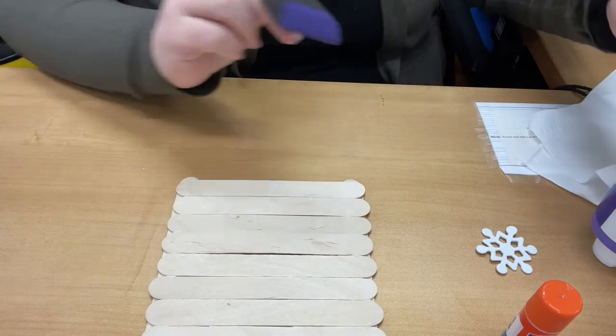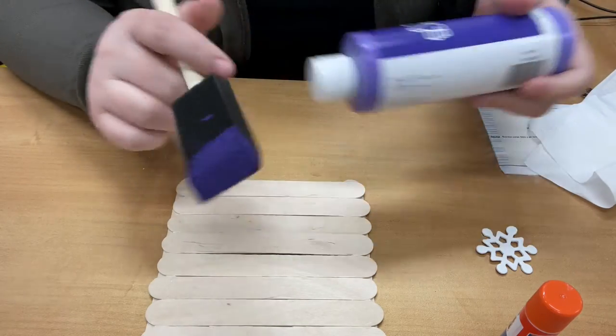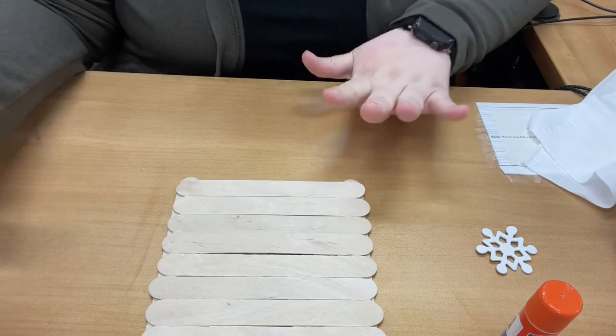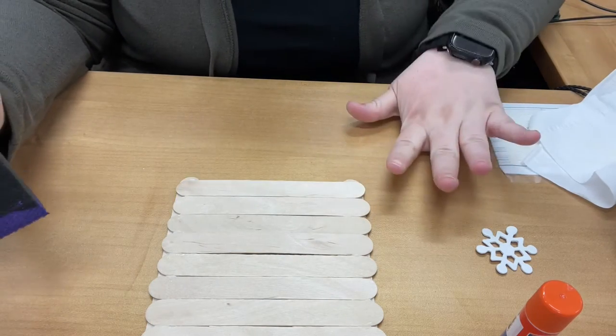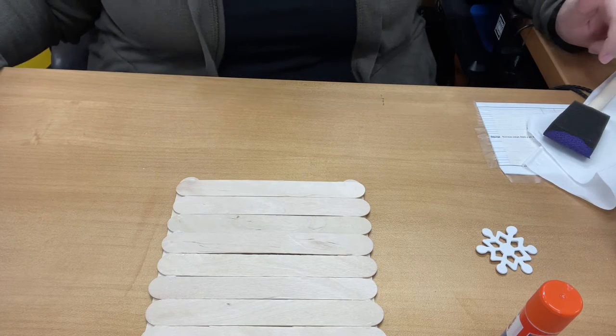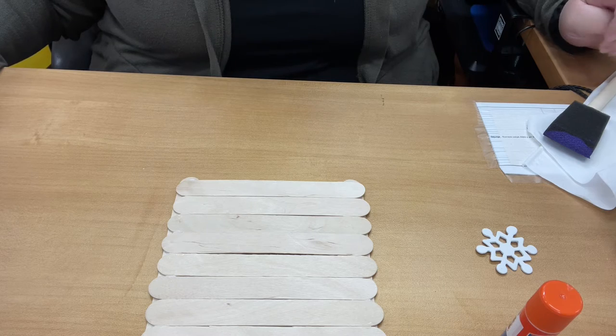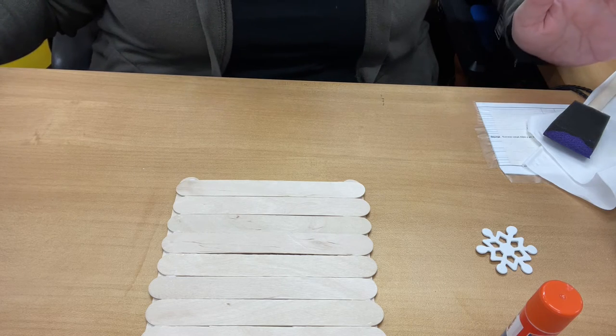Once this is dry, you're going to paint it. You're going to take your purple paint, squirt, dip it in and just paint it. And then again, you're going to want to let this dry. If you do a thin layer, it shouldn't take more than a half hour, but it's very important that you want everything to be dry. Otherwise it gets just a little messy.